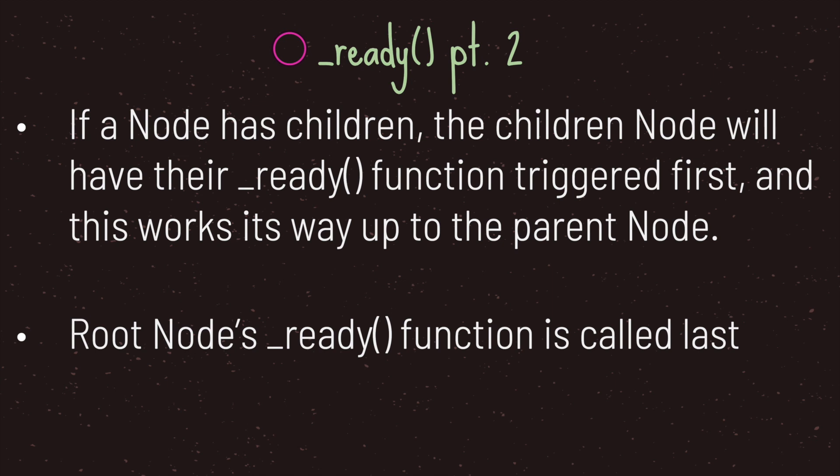If a node has children, the children nodes will have their ready function triggered first, and this works its way up to the parent node. One thing to keep in mind is that the root node of your scene will have its ready virtual method called last.